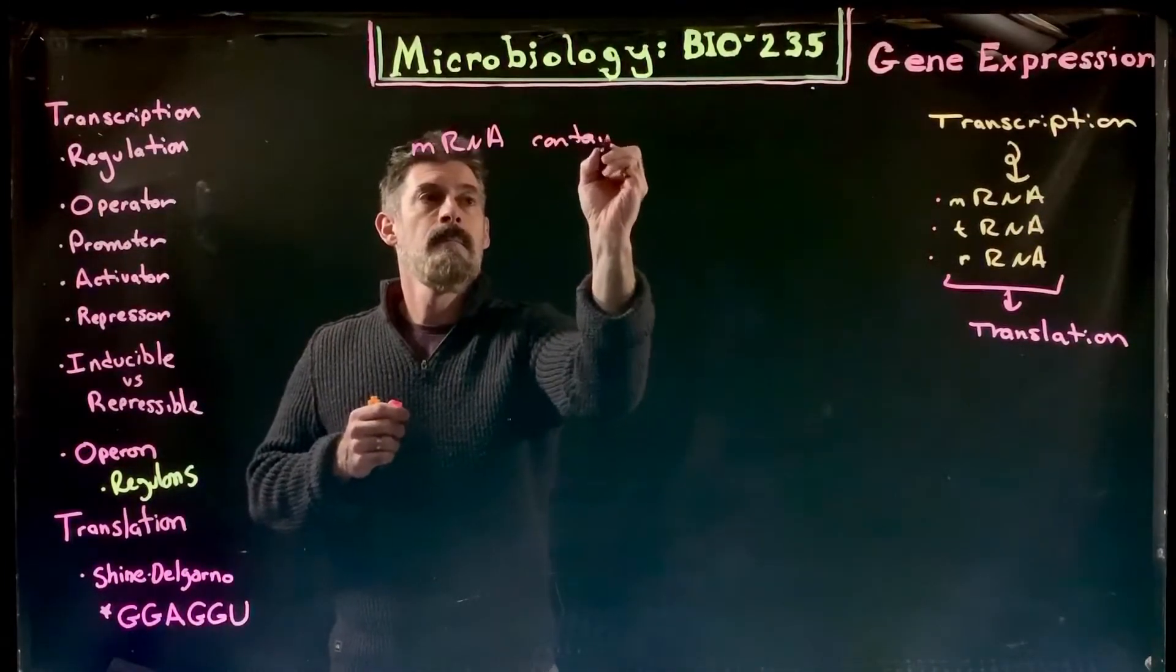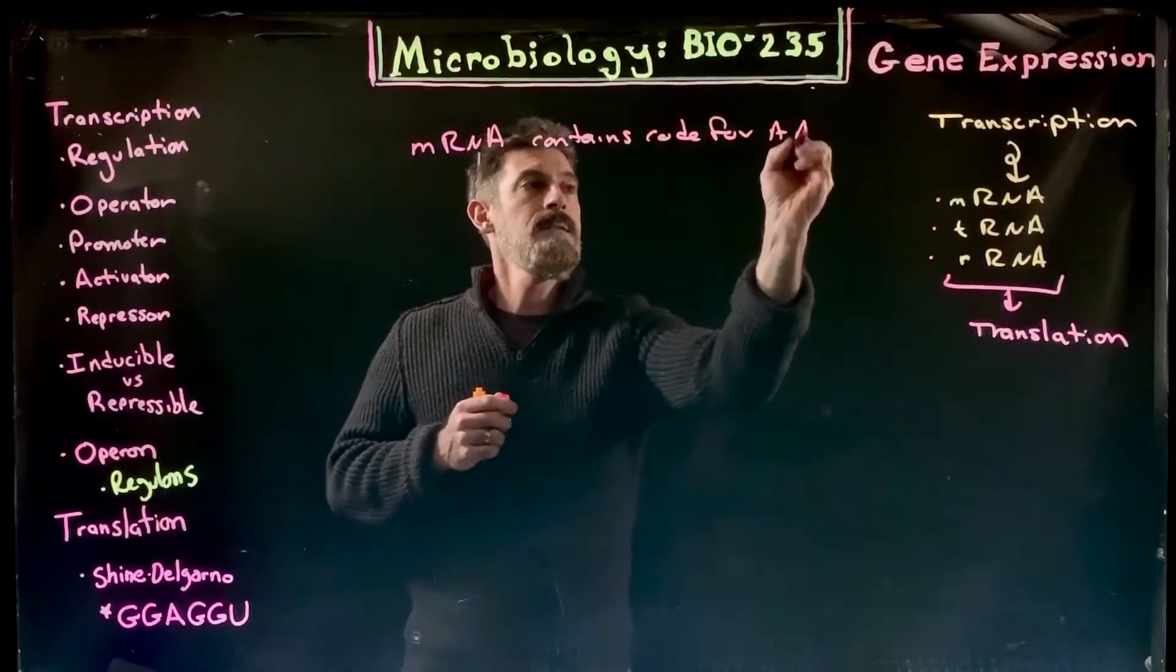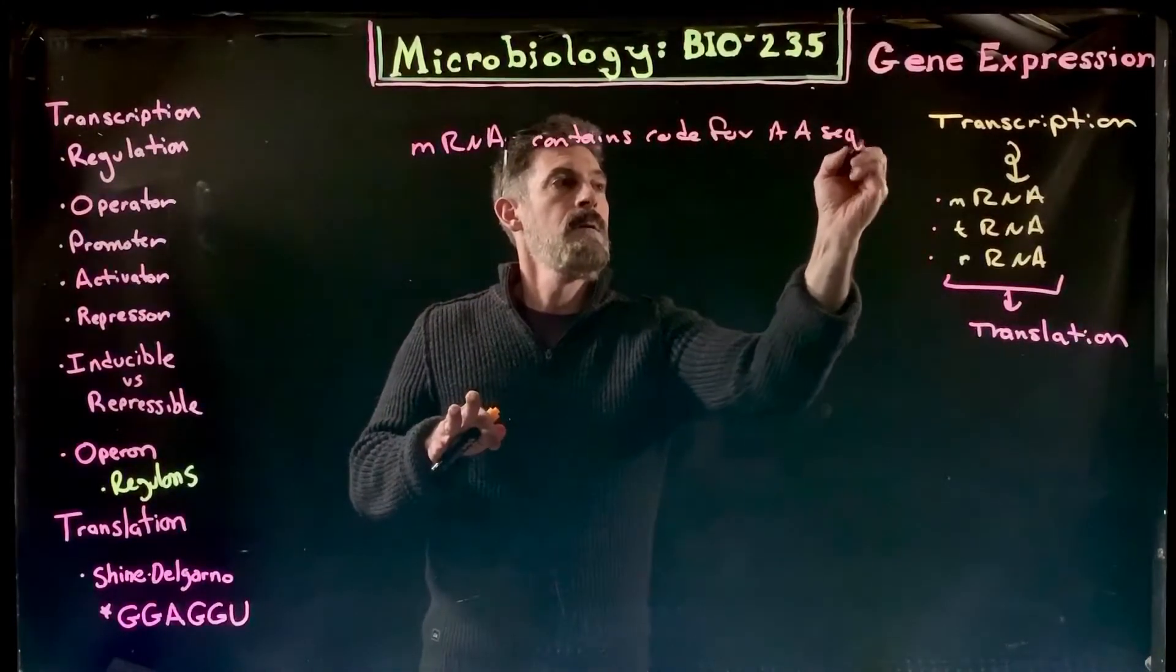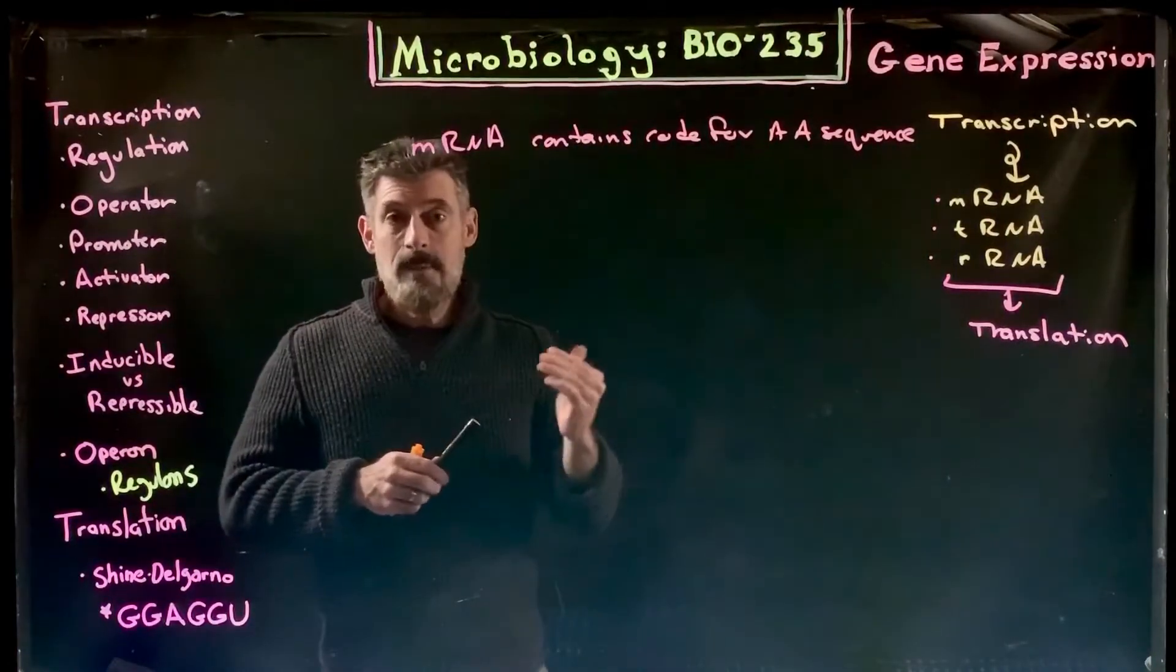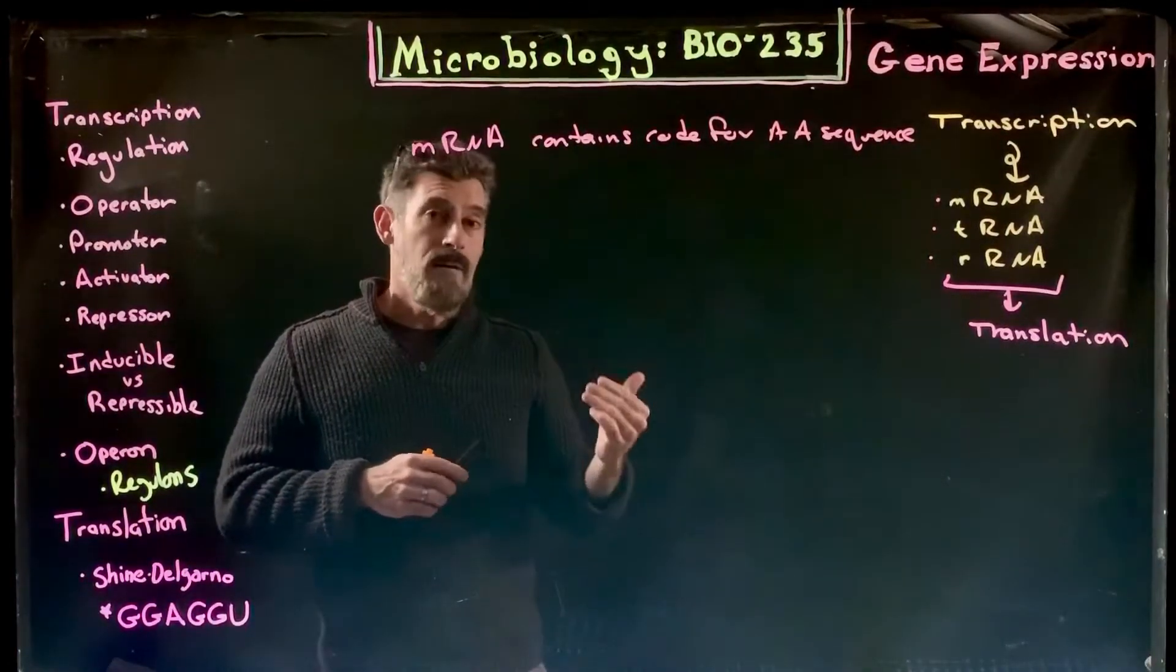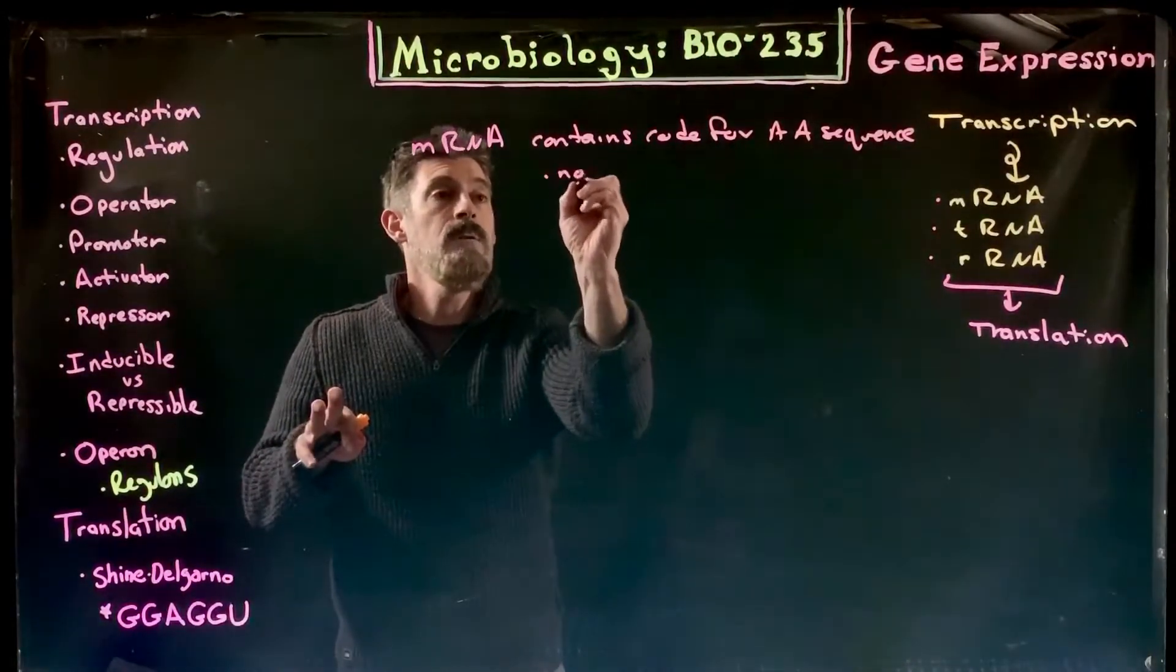Messenger RNA contains the code for the amino acid sequence. Now it typically has to be modified. In eukaryotes there are introns and they have to be removed, but we have no introns in bacteria.